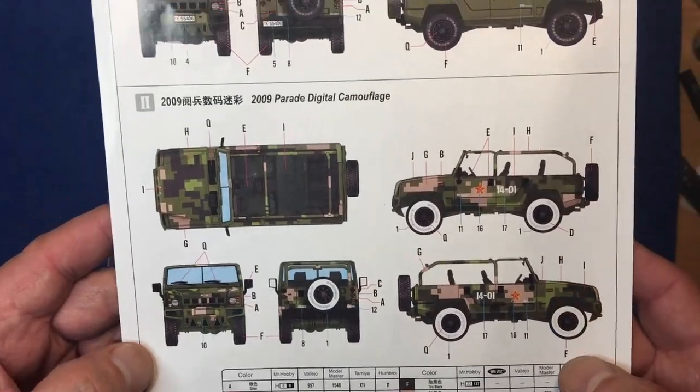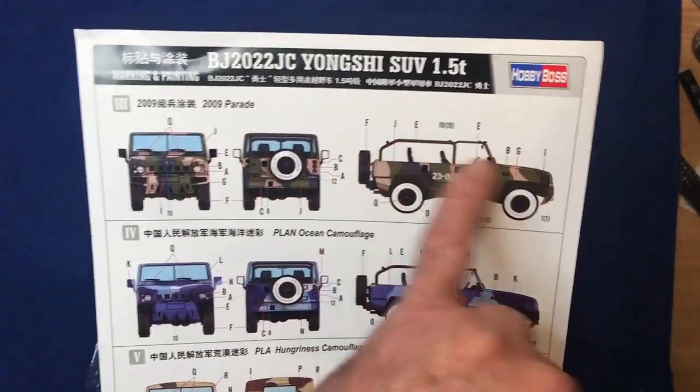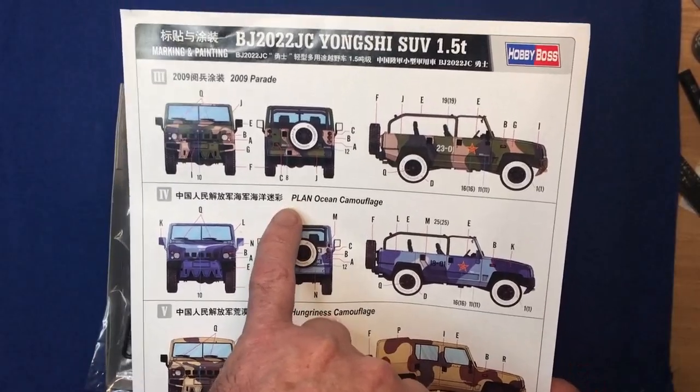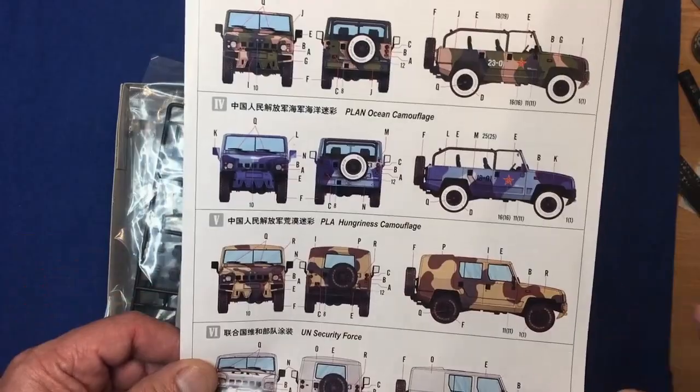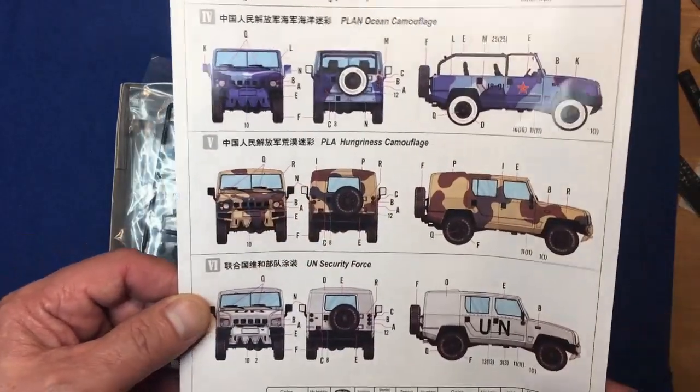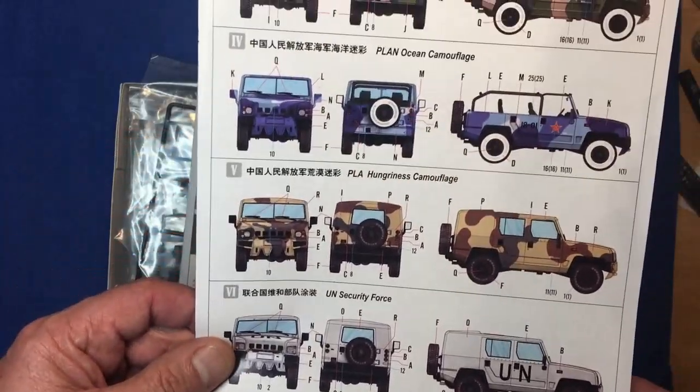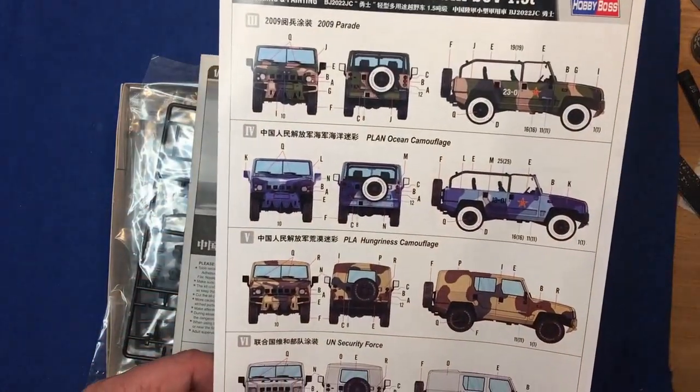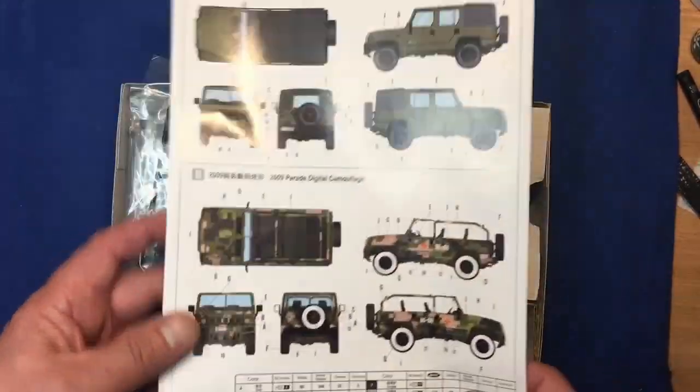So we've got a digital camo scheme here, plain green. And then we've got an ordinary camo scheme with white wall tires and a parade. I'm assuming this is PLAN, that's People's Liberated Army Navy, is it? And then we've got the PLA, Hungerness, Camouflage, whatever that is. I'm assuming that's for food. I don't know. And then we've got the UN one here. So I'm sure somebody will tell me in the comments what the PLA, PLAN are. So that looks quite attractive in those colors. I've had a quick look through. I've got all the paint to do all the versions.